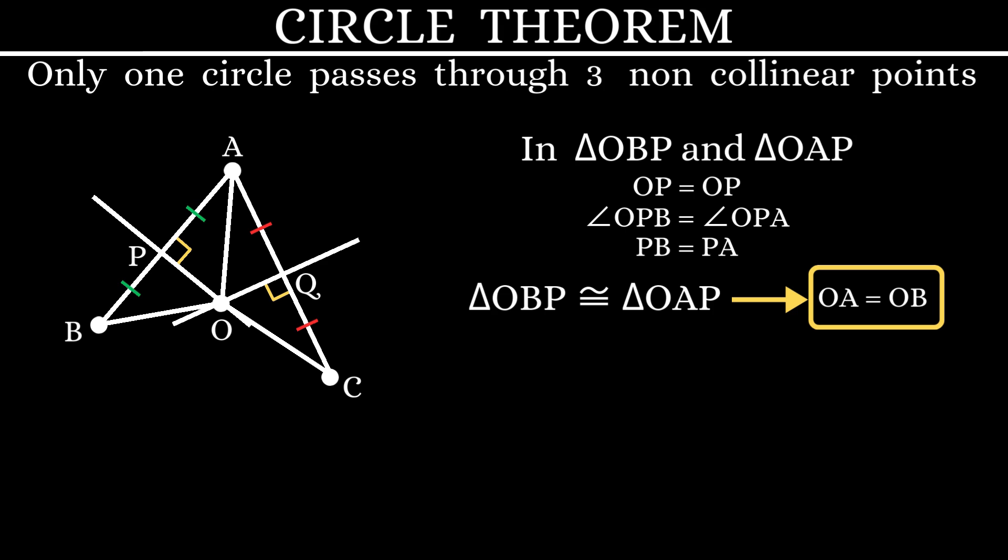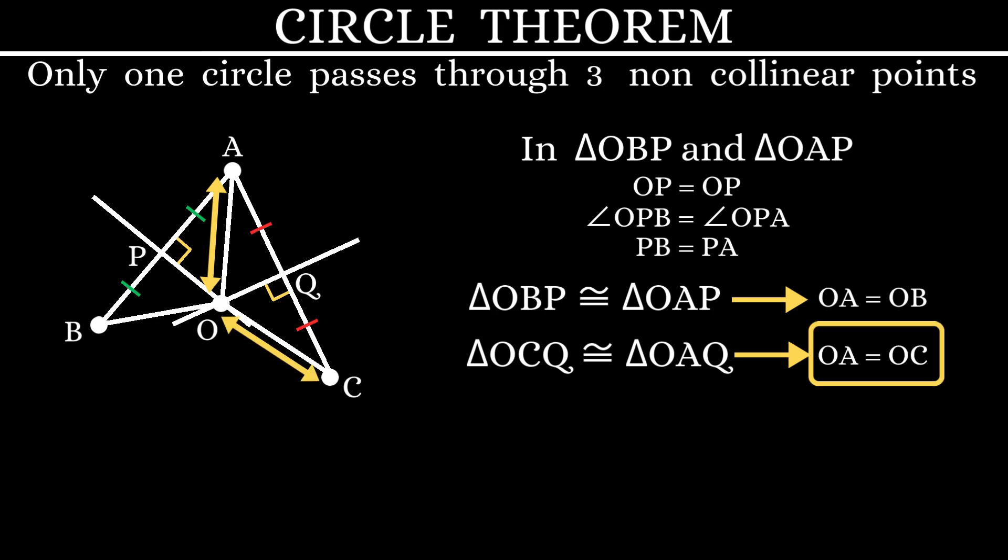In a similar manner, we can also prove that the triangles OCQ and OAQ are both congruent. Which means the sides OA and OC are equal.